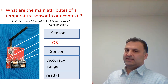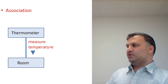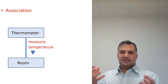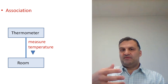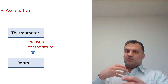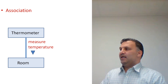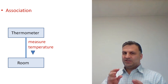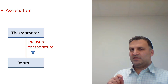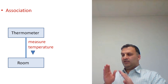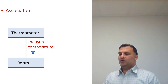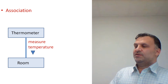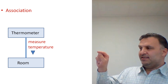Association is a relationship between two classes where one class can cooperate with or apply an operation on another class. For example, a thermometer in our system can measure the temperature of a room. The UML symbols changed slightly between UML 1 (before 2005) and UML 2 (after 2005), but this is the most common representation of the association relationship.